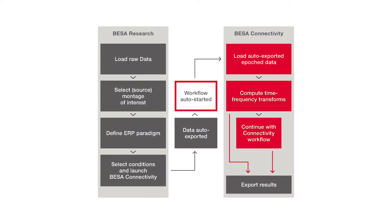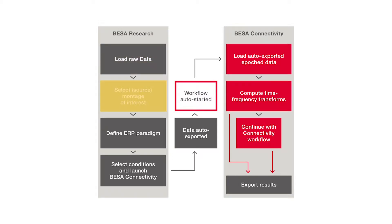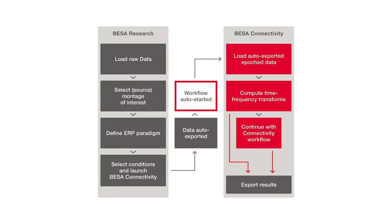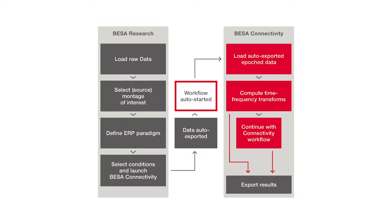In this video I would like to walk you through the steps that you need to take if you want to analyze your data in terms of brain connectivity between the generators of oscillatory activity. This diagram shows the steps that you need to take. After loading your raw data you select the montage or source montage of interest as a first step. You then define your paradigm and define the conditions of interest. When you launch BISA connectivity the data will automatically be exported and the time frequency workflow will automatically be started. After walking through the transformation of the data into the time frequency domain you then start the connectivity workflow, which will crunch the numbers and present you with the connectivity between the montage channels of interest.